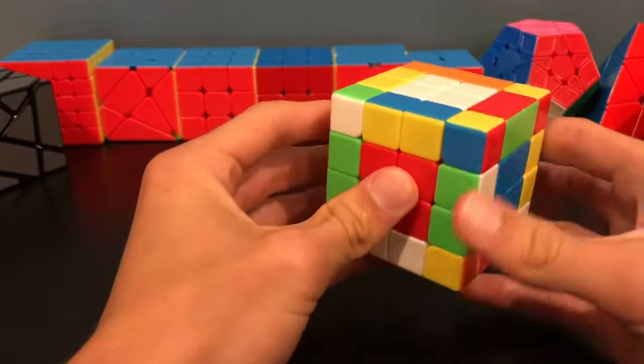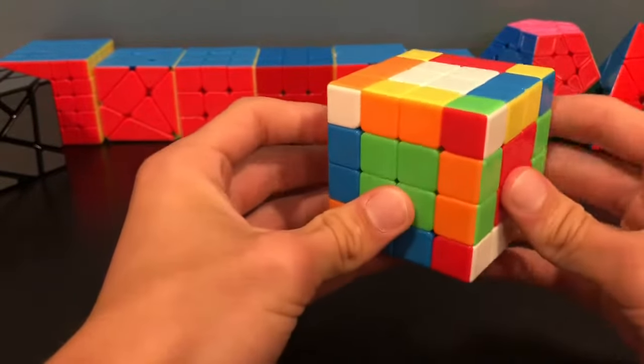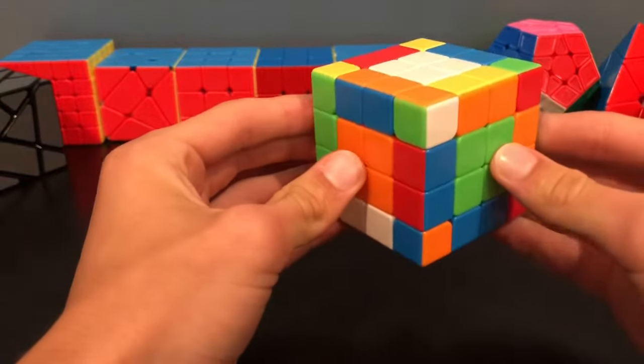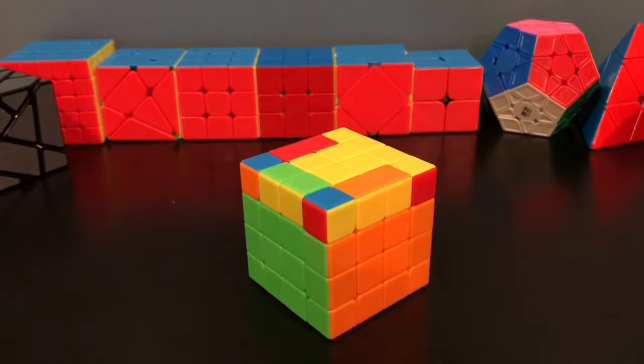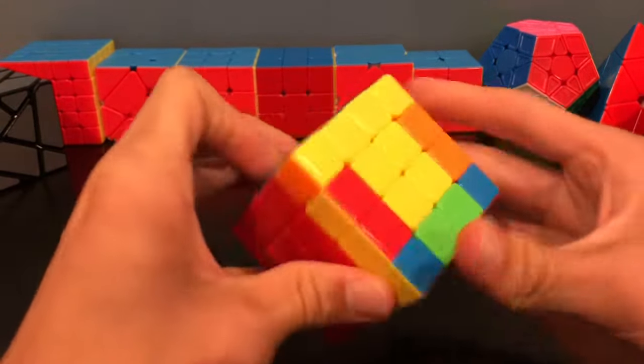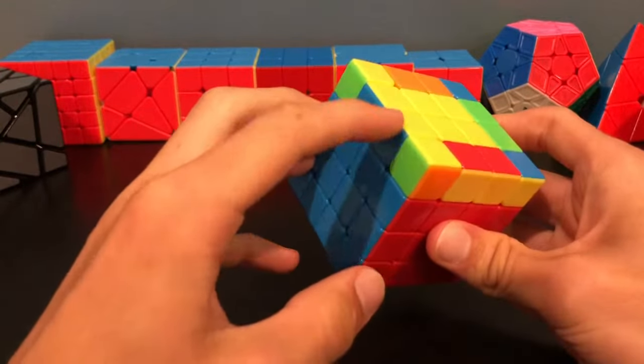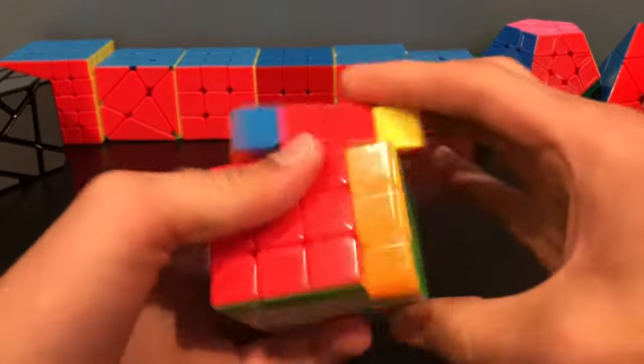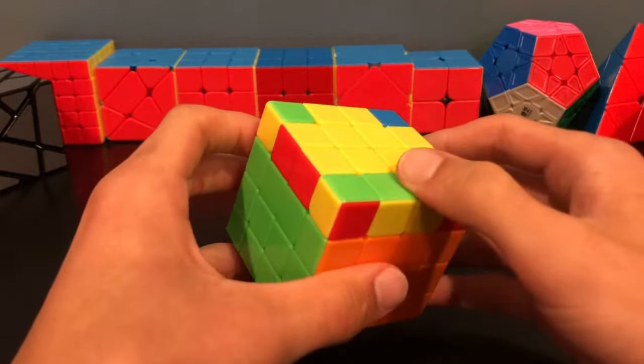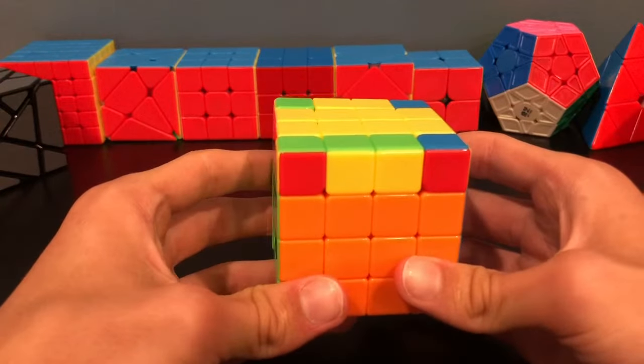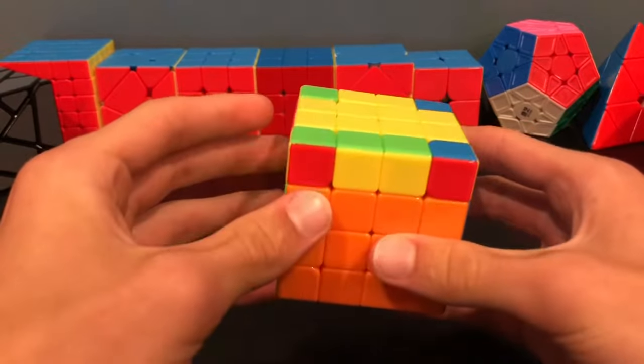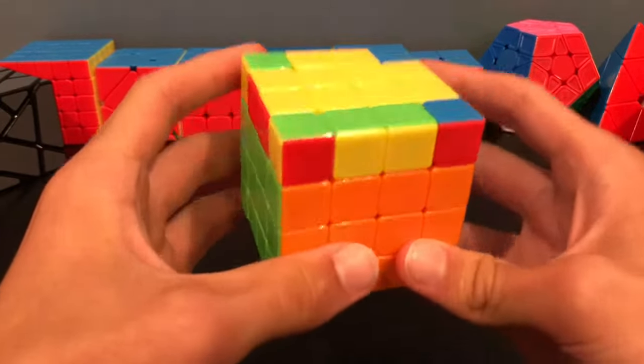Now that you have all the edges paired up, you can start solving it like a 3x3. Now you're not quite done, there's still a few problems that you could run into. I'm going to go over these now. The first problem you might run into is on your last layer cross. You might have weird cases that you haven't seen before, like this one where only one edge is flipped up. And even with trying to fix them, you just still keep getting one edge away from having a cross. This is called a parity error. These only happen on big cubes. This isn't possible on a 3x3. But you're going to need to use a special algorithm to solve this.